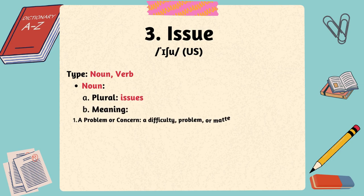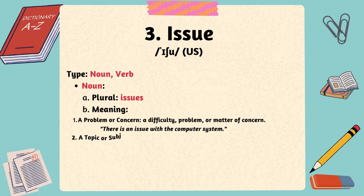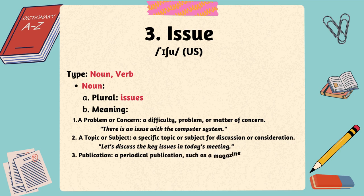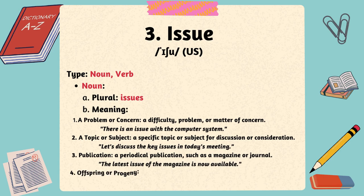Here are some common meanings of issue as a noun. One, a problem or concern: a difficulty, problem, or matter of concern. There is an issue with the computer system. Two, a topic or subject: a specific topic or subject for discussion or consideration. Let's discuss the key issues in today's meeting. Three, publication: a periodical publication, such as a magazine or journal. The latest issue of the magazine is now available. Four, offspring or progeny: children or descendants. He died without issue.